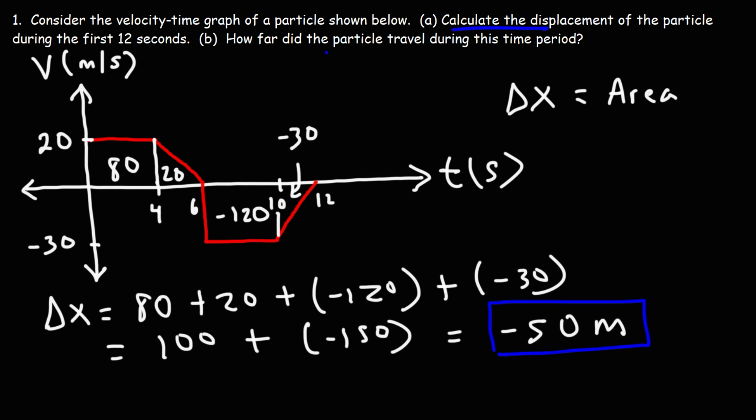Now part B, how far did the particle travel during this time period? So the question, how far? We're looking for distance and not displacement for part B.